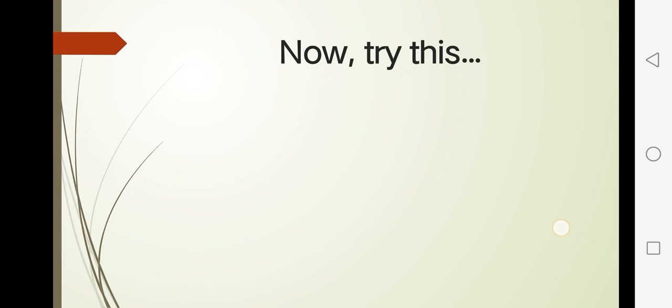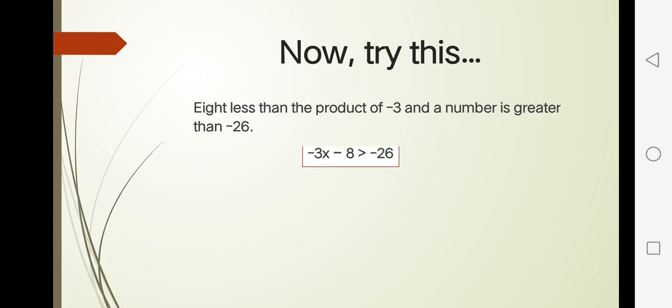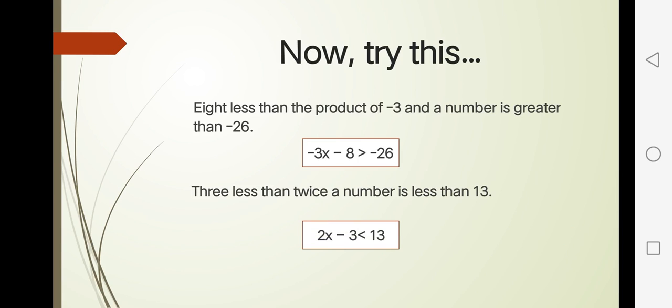Now let's try this. 8 less than the product of negative 3 and a number is greater than negative 26. So we have negative 3x minus 8 is greater than negative 26. And 3 less than twice a number is less than 13. So 2x minus 3 is less than 13.